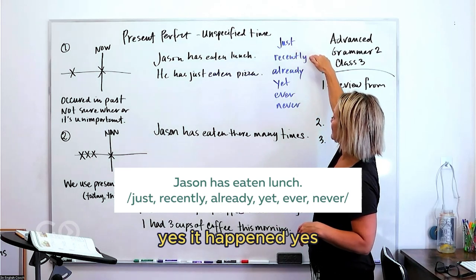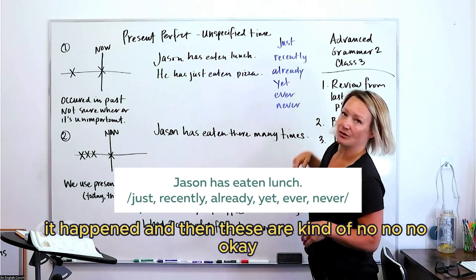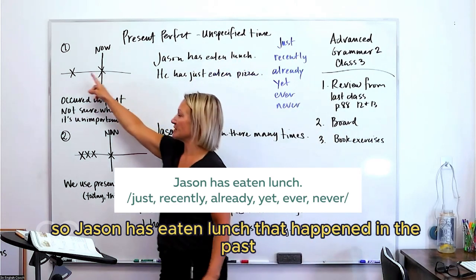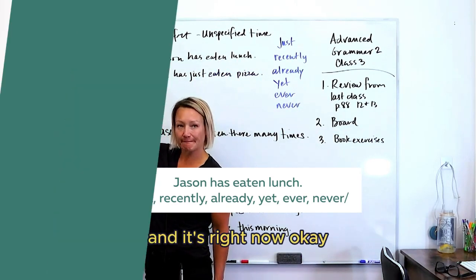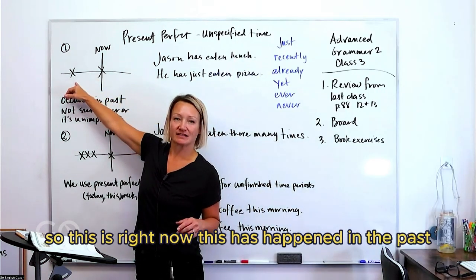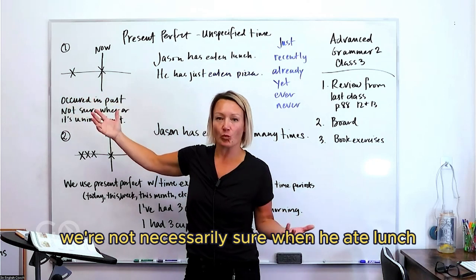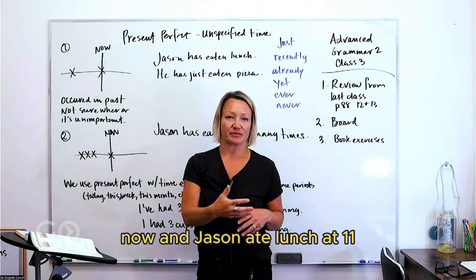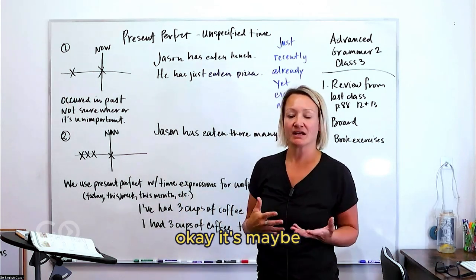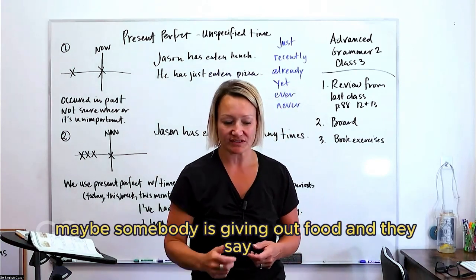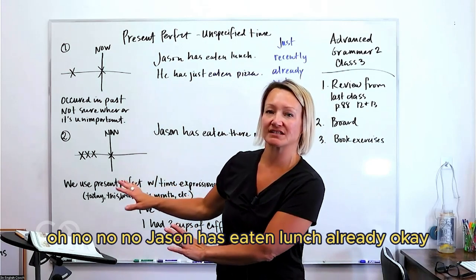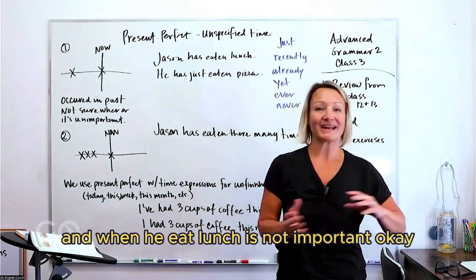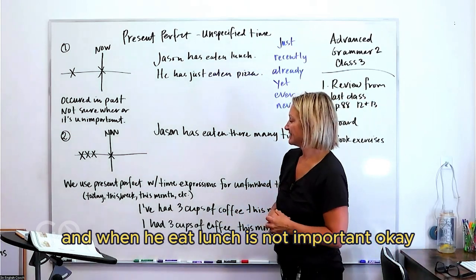So these are kind of like yes it happened, yes it happened, yes it happened, and then these are kind of no, no, no. Okay, and we'll look at some examples of that. So Jason has eaten lunch, that happened in the past and it's right now. We're not necessarily sure when he ate lunch. Maybe it's two o'clock right now and Jason ate lunch at 11, but it's not really clear or it's not really important. Maybe somebody is giving out food and they say, oh no, no, no, Jason has eaten lunch already. So then that's a possibility and when he ate lunch is not important.